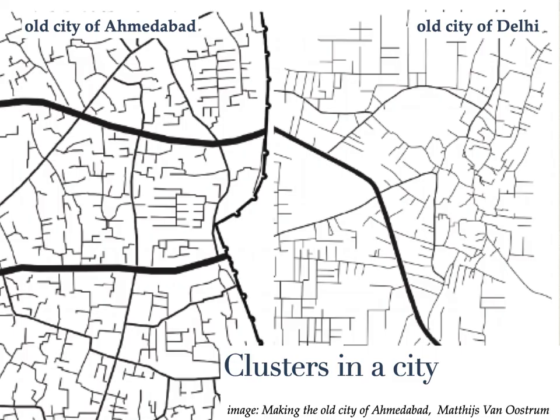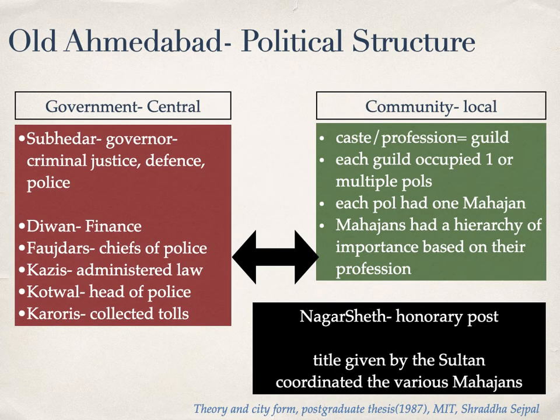Before the advent of modern political structure, even cities in India were built in clusters. The city of Ahmedabad was founded in 1411. In the beginning, the city had about 40 guilds, professional, absorbing people from various castes. Each guild occupied their own space, a pole. By 1872, these poles were reportedly occupied by members of the same caste and similar occupation.